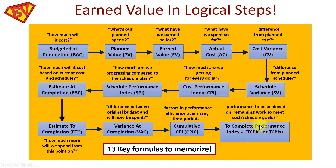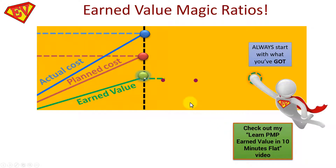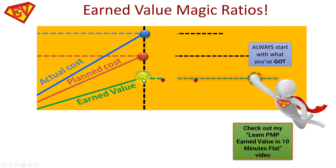When you get into the exam room, grab a sheet of paper and scribble down your three main metrics: Actual Cost at the top, Planned Cost in the middle, and Earned Value at the bottom. This gives you a quick understanding of the variances. For those still unsure about what earned value is, check out my 'Learn PMP Earned Value in 10 Minutes Flat' video on YouTube. The most important rule: always start with what you've got — Earned Value is your frame of reference.